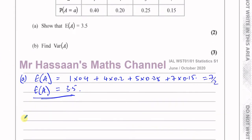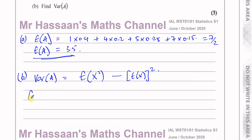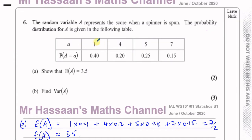Part B says find the variance of A. The variance of A is equal to the mean of the squares minus the square of the mean. So we need to find the mean of the squares, where you take each outcome and square it: 1, 16, 25, and 49.